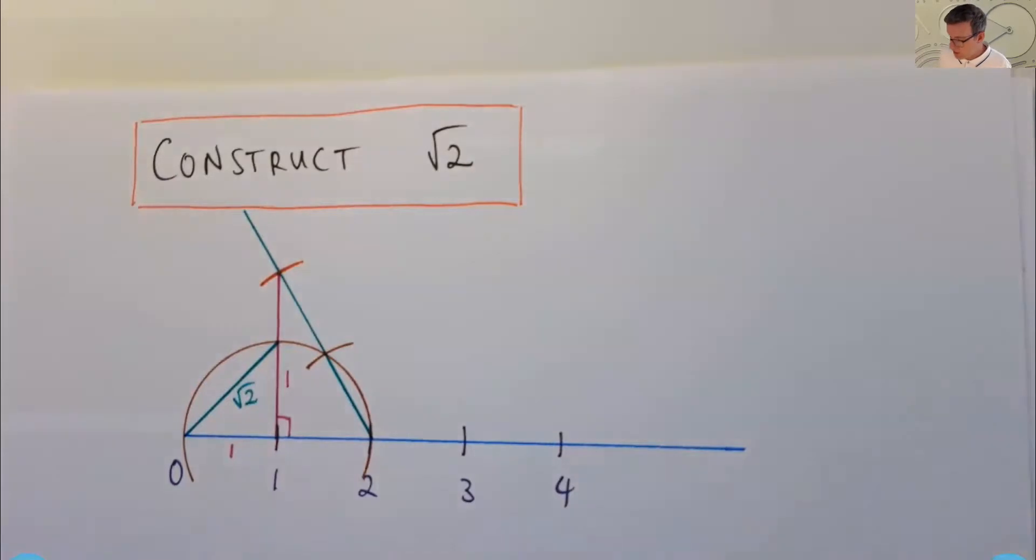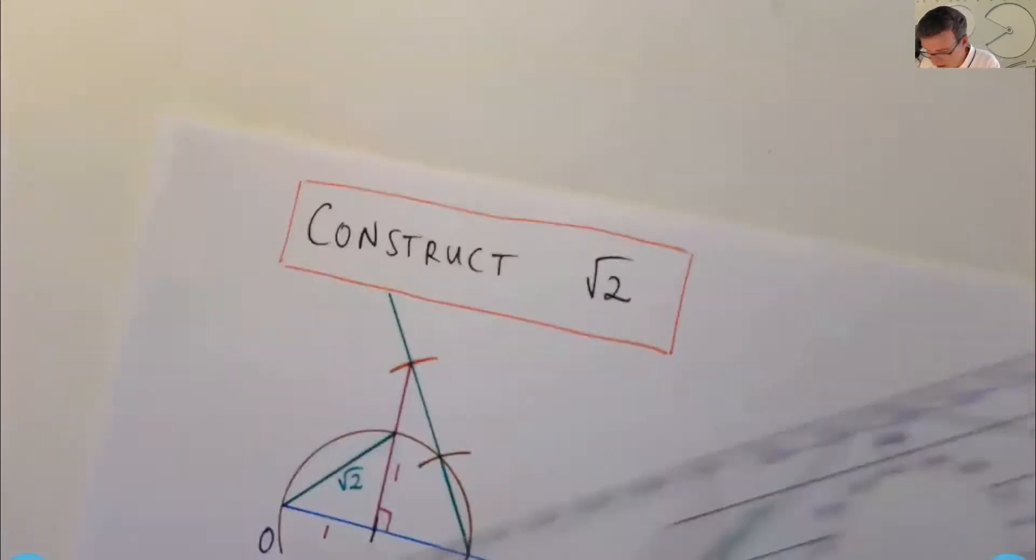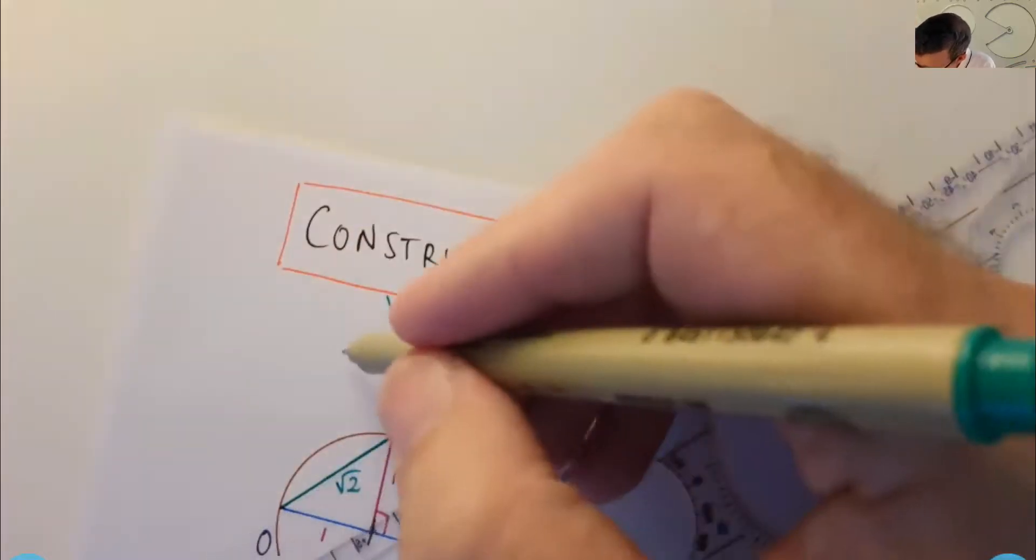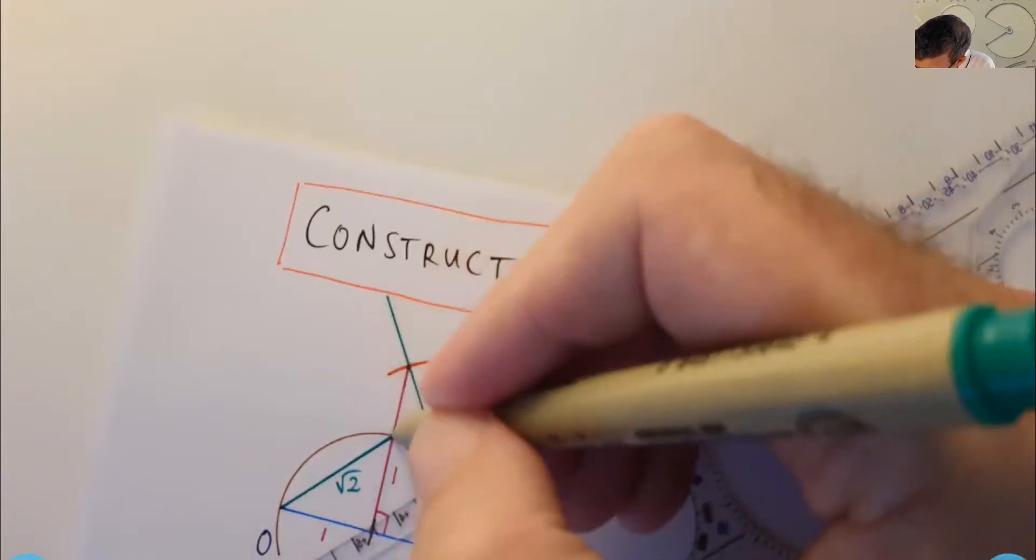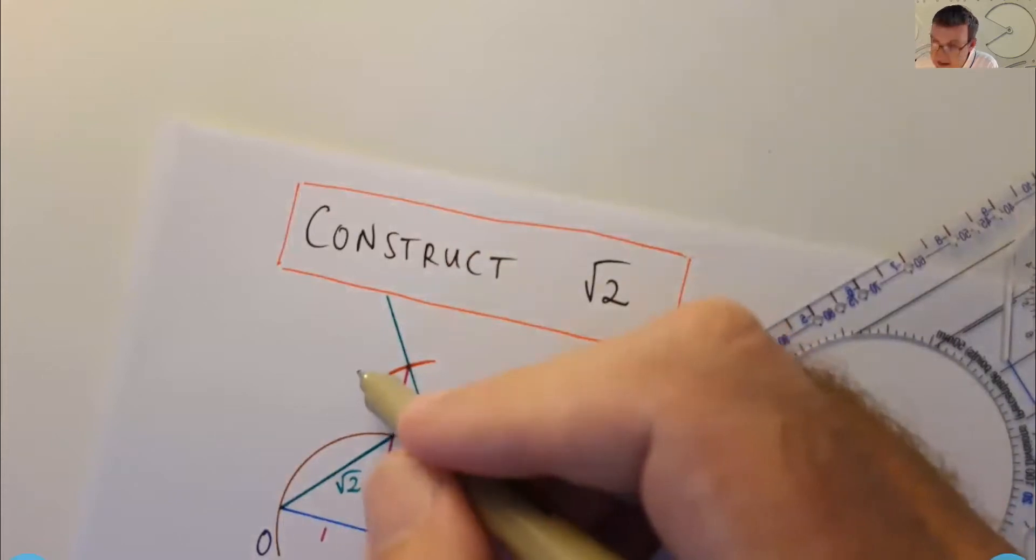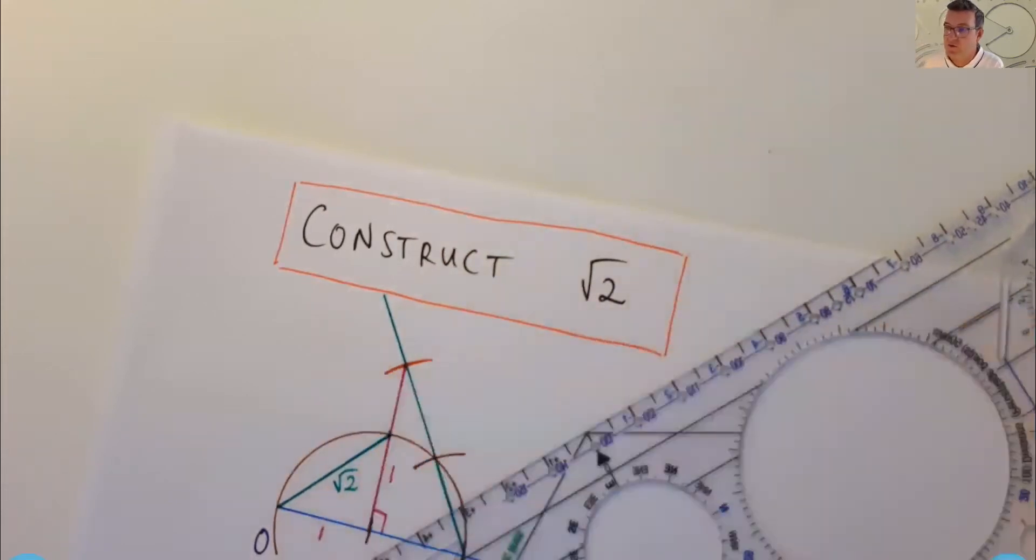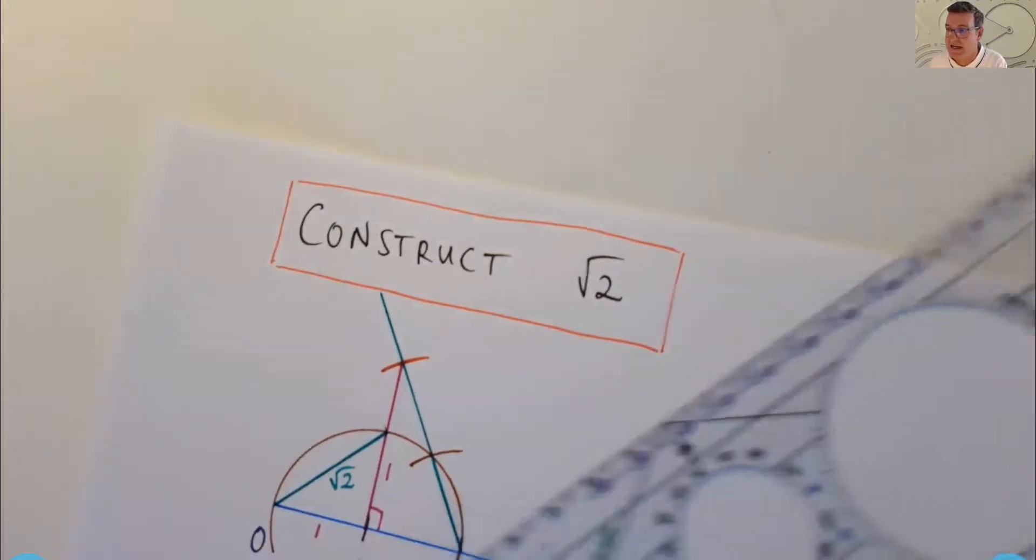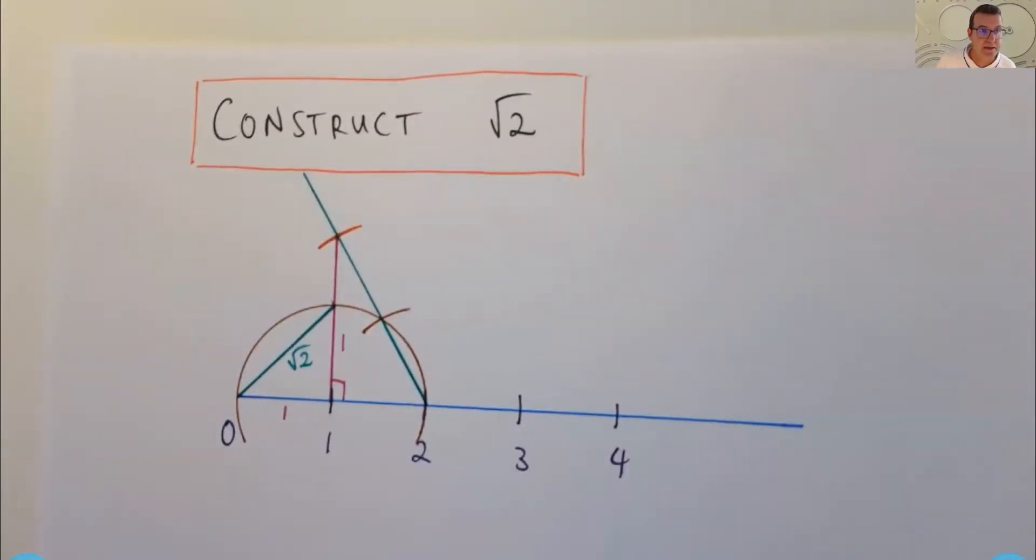Now, what happens if I wanted to construct some other square roots of numbers, like root 3 or root 5 or something like that? Well, that's pretty easy to do. So what I can do is I can extend this a bit and drop a perpendicular through this point here of one unit in length, just like we did down here. So you're going to get a triangle with base root 2, height 1, and there's a right angle. And the hypotenuse will be root 3. So you can continue this around as far as you like. It's not very efficient, but it shows that it can be done.